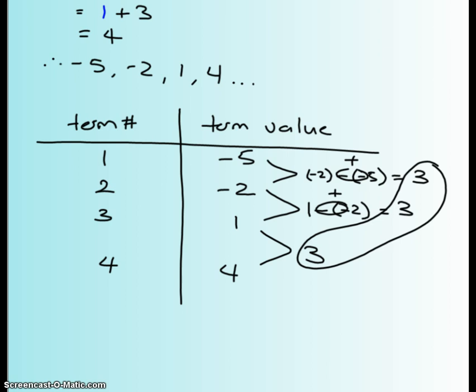So if all of these are the exact same, that means your first differences are indicating it is some sort of a linear function. So that 3 is going to come in handy when you start your explicit formula.